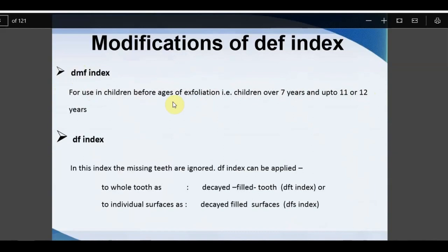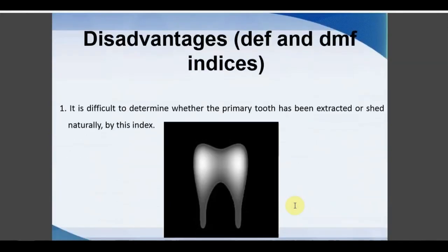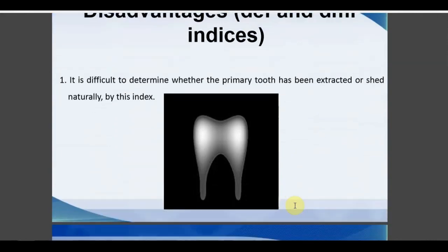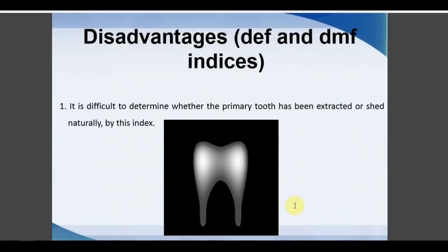A modification of DEF is the DFT index, used in children before the age of exfoliation — children over 7 and up to 11 or 12 years. In mixed dentition, DMF for permanent teeth can also be applied since most teeth will have erupted. In DFT, missing teeth are ignored because of the controversy of natural exfoliation versus extraction, removing the 'M' category entirely. The major disadvantage of DEF and DFT is difficulty determining whether the primary tooth was extracted or naturally shed.